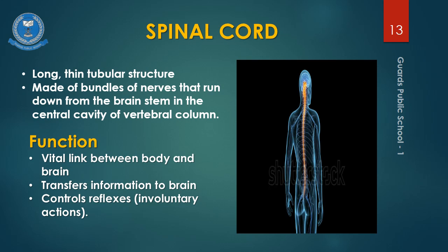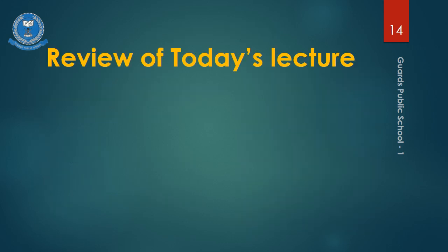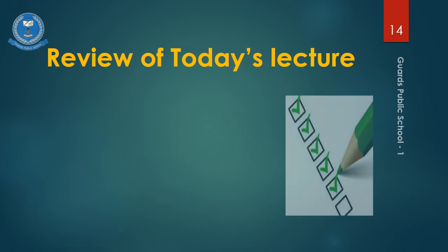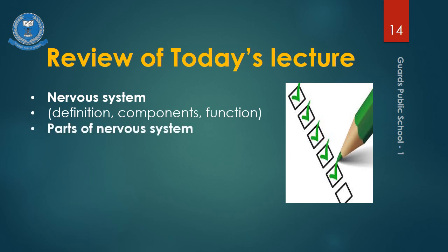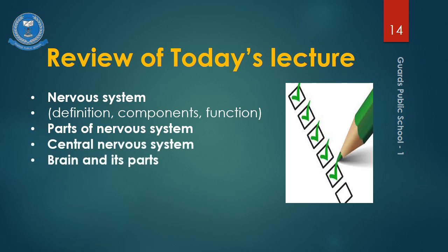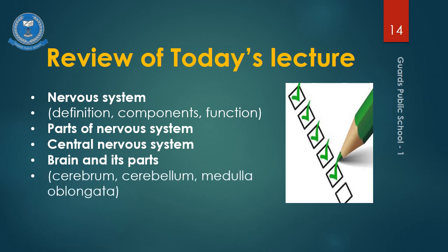I hope that everyone has completely understood the central nervous system. In this way, we have finished today's lecture. In the next lecture, we will discuss the second part of the nervous system — the Peripheral Nervous System. In today's lecture we discussed: Nervous System definition, components and function; Parts of the Nervous System; Central Nervous System; Brain and its parts — Cerebrum, Cerebellum, Medulla Oblongata; and Spinal Cord.